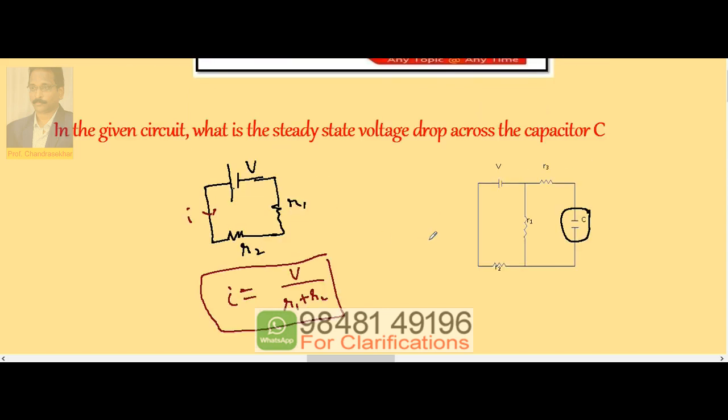state voltage drop, which is required. That means the potential difference existing between these two points, or potential difference across this R3, because R3 and C are connected in series. So we need the potential difference across this one.